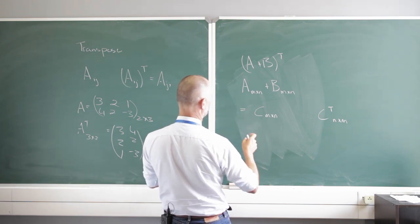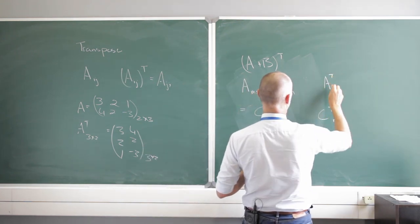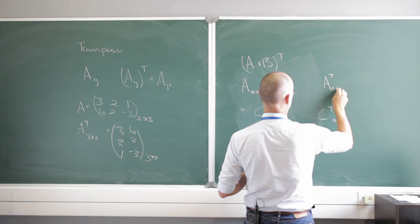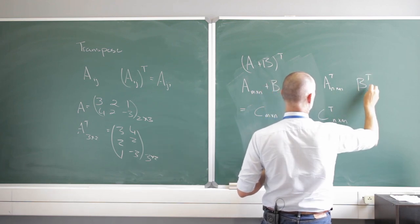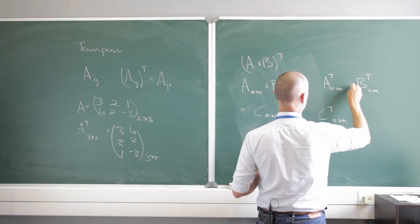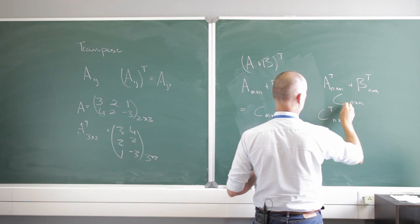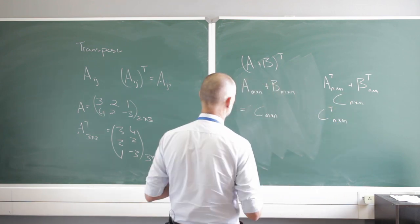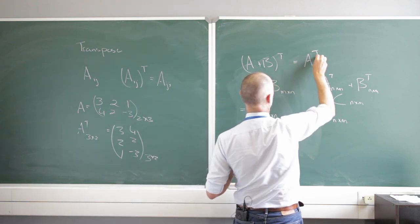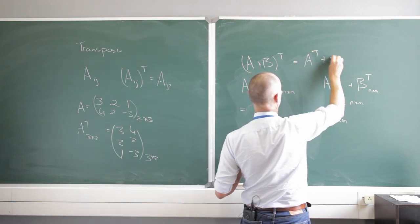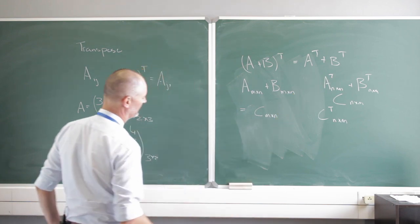If I add A and B first and then take the transpose, versus taking A transpose — which is N×M — and B transpose — also N×M — and adding them together, I also get an N×M result. So it doesn't matter what you do: (A + B)^T is going to be exactly the same as A^T + B^T. There's no difference between those.